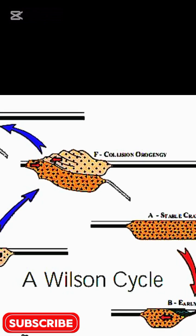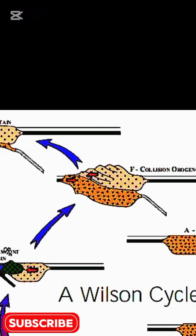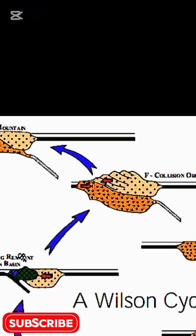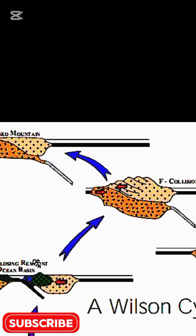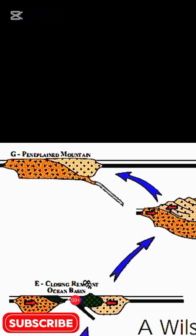From stage E to stage F, collision orogeny occurs—the peak of mountain building. Imagine the Himalayas 20 million years from now, even taller than now, because today they are eroding as they arise.